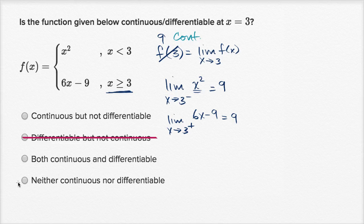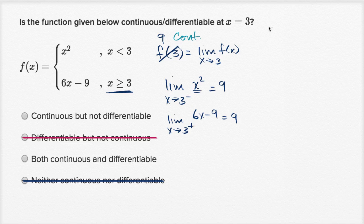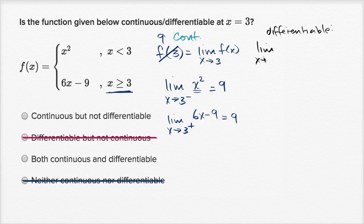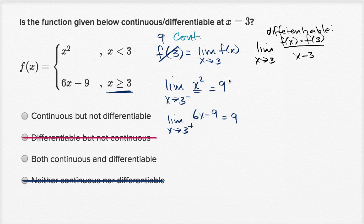So we can rule out the 'neither continuous nor differentiable' choice. Now let's think about differentiability. In order to be differentiable, the limit as x approaches three of f of x minus f of three over x minus three needs to exist.